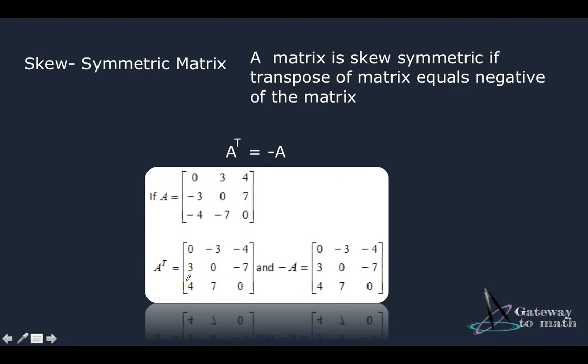So if I put negative to my original value here, then this becomes positive, this becomes positive, this becomes negative, this becomes positive, this becomes negative, which gives me the transpose of the matrix. So this is skew symmetric matrix.